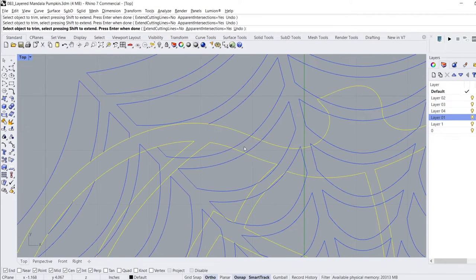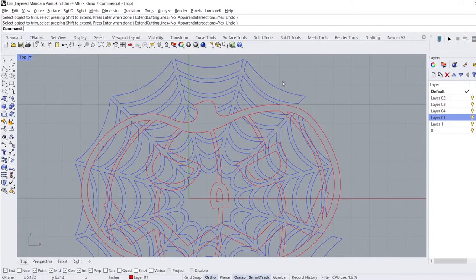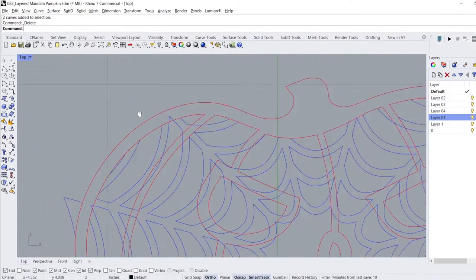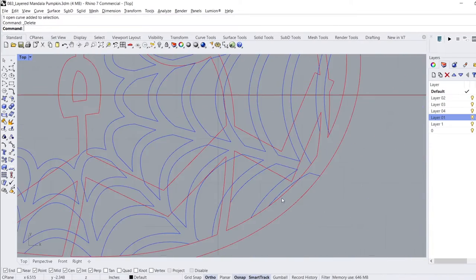You won't see this in the video, but I decided to scale down the mandala so that the offset lines were 0.2 inches instead of 0.25. This tightened up the pattern and made it fit a lot better in the jack-o'-lantern silhouette.